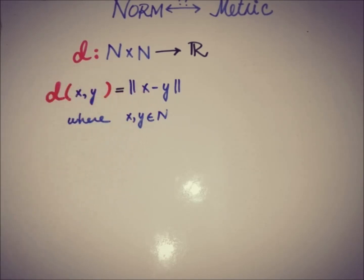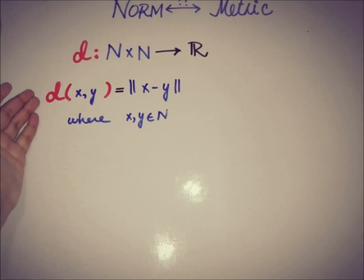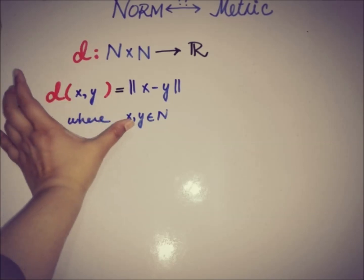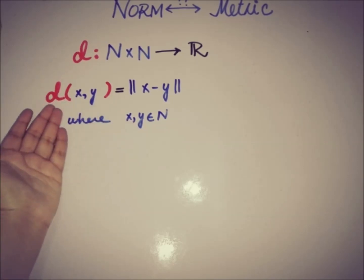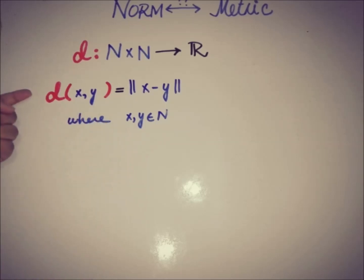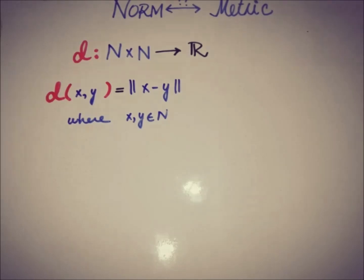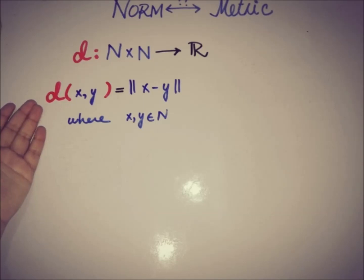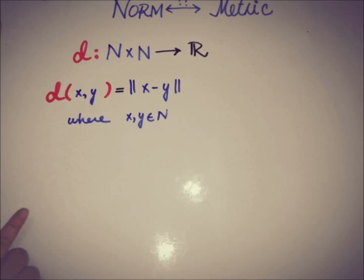This function d takes the Cartesian product N×N and gives us a real number, namely the norm of the difference of two elements of N. The target is to show d is a metric. To prove this relation between norm and metric space, we have to show the three basic properties of a metric space: non-negativity, symmetry, and triangle inequality.